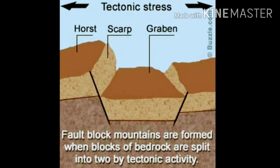The raised chunk of land is called a block mountain, fault block mountain, or horst. The sunken portion that goes down into a rift is known as a rift valley or graben. Now let's see what volcanic mountains are.